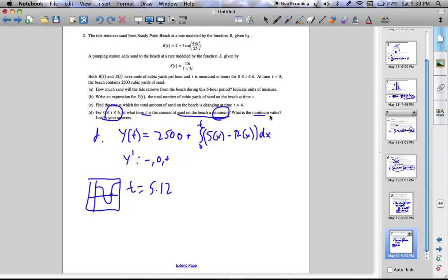It also asks for the minimum value of the sand. So we need to plug this into the y of t function. So y of 5.12 gives the value 2492.37 cubic yards of sand.